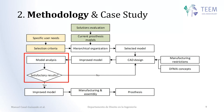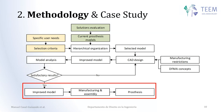If this concept is applied through CAD software, we will obtain an improved model. This model is later evaluated to see if it is acceptable or not. If it is not, it would be modified again using CAD design software. If it is acceptable, we obtain the improved model, which is then manufactured and assembled, and we have the prosthesis ready to give to the user.